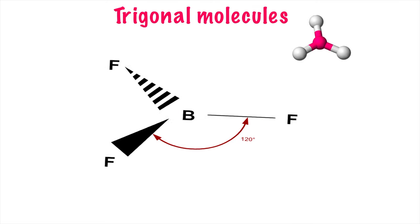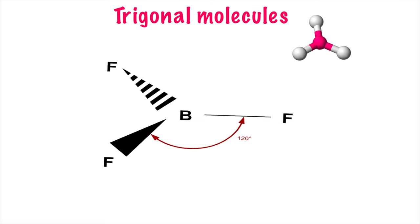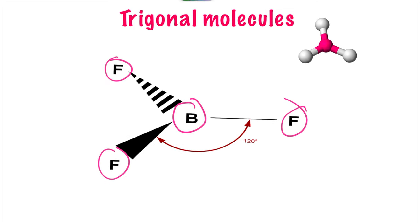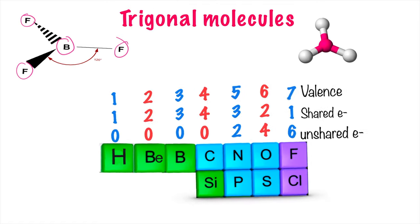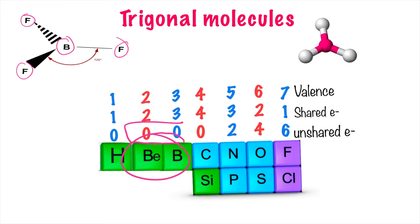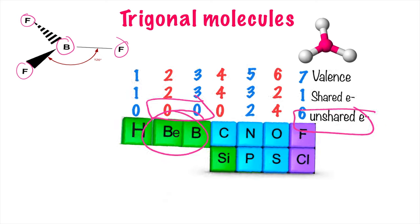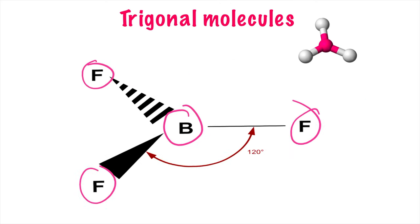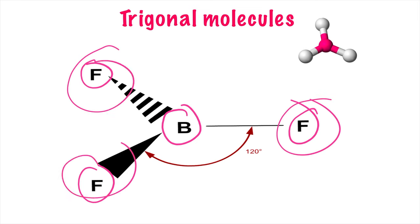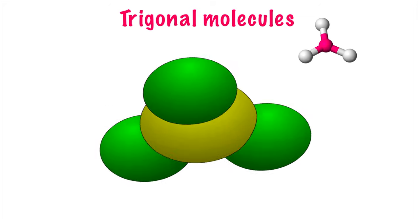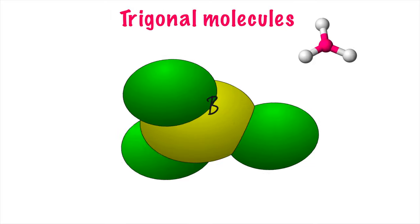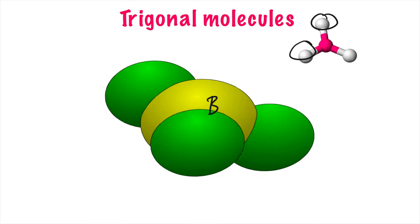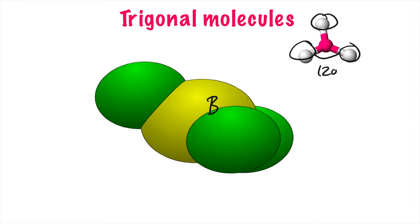Another type of molecule has a trigonal planar shape. A very good example is boron trifluoride. Boron and beryllium are members of groups three and two respectively, and do not have any unshared electrons — zero unshared electrons. With a central atom having no unshared electrons and three atoms around the center, giving a total of four atoms, the shape is trigonal planar. The angle in trigonal planar molecules is 120 degrees.